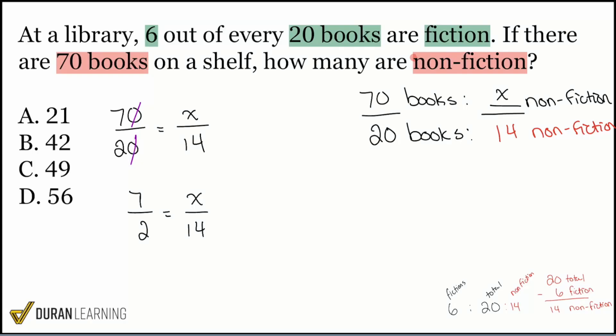Here I can cross multiply and divide if I'd like to, but I can actually get the same correct answer by just doing this. Comparing the same thing, comparing the same way. 2 goes into 14 seven times. That's times 7. So going left to right, that's times 7. So I'll do the same thing up top. 7 times 7, what is that going to be? 7 times 7 gives me 49. And there we go. That is 49 nonfiction books. Making the correct answer in this problem answer choice C.